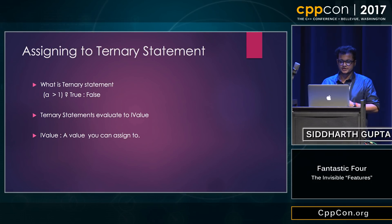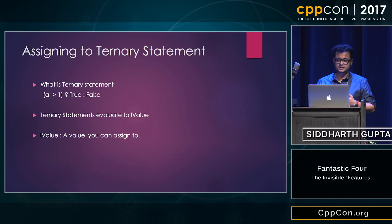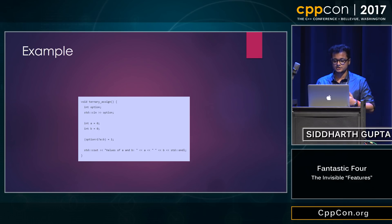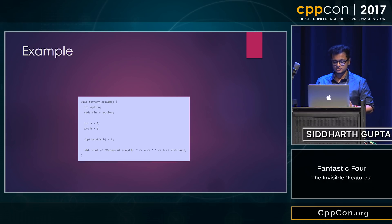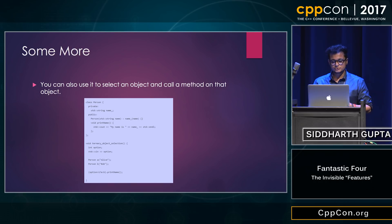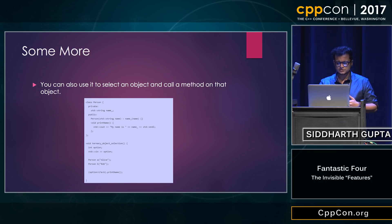The next thing I want to talk about is assigning to a ternary statement. Ternary statements evaluate to an L-value. Here's an example where you can use the ternary statement to take a value and assign it to another variable. Whatever value 'option' has, you can assign it to either A or B depending on whether option is greater than one or less. You can also use it to select an object and call a method on that object — this is something I came across this summer that I had never used before.